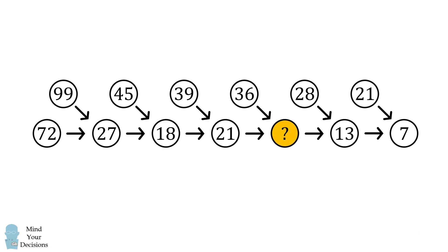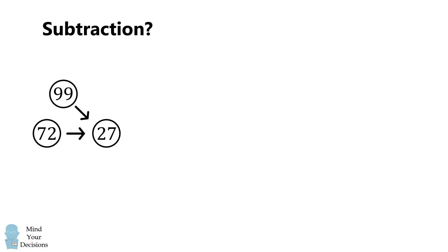At first glance, it seems that the rule is to subtract the smaller number from the larger number. For example, 99 minus 72 is equal to 27. We can check the next case. It is again true that 45 minus 27 is equal to 18.